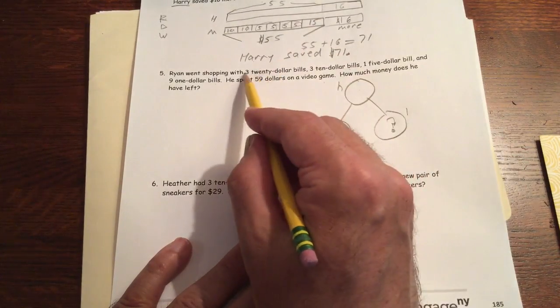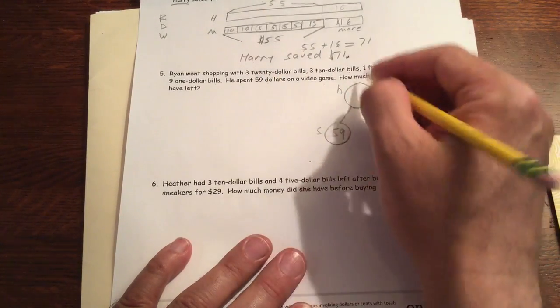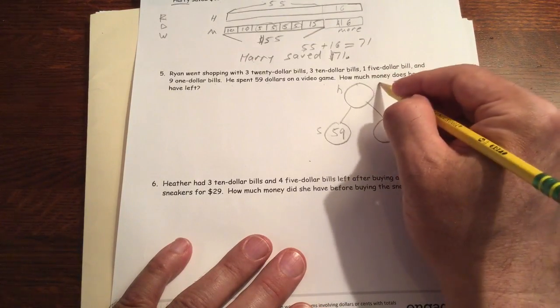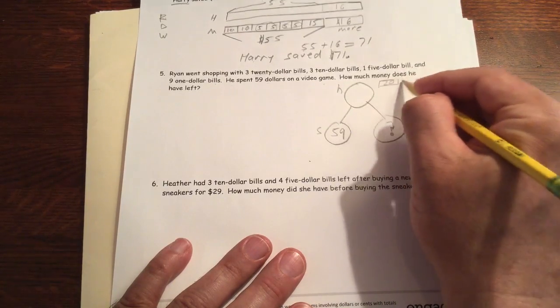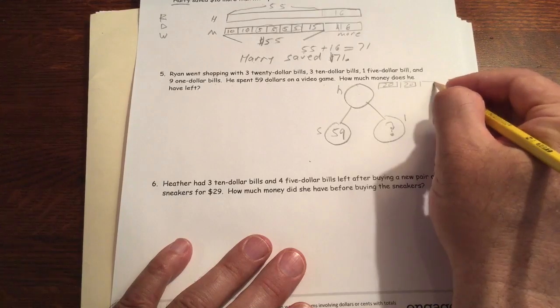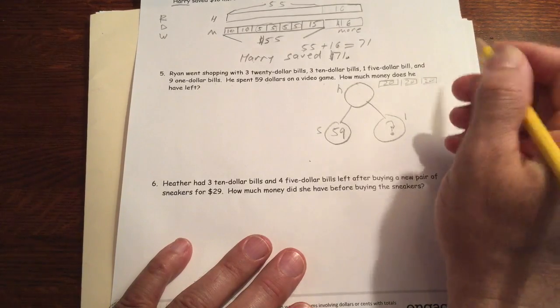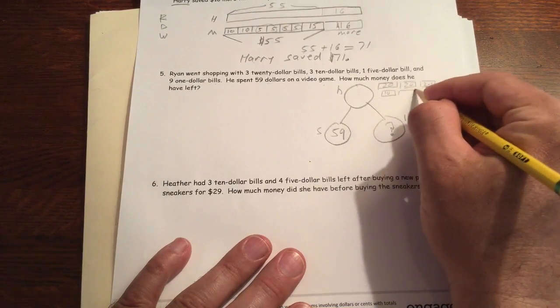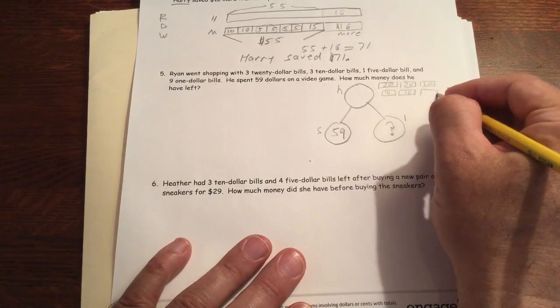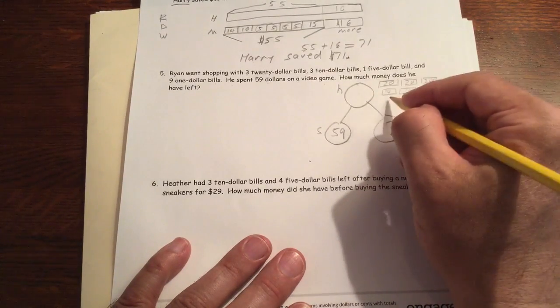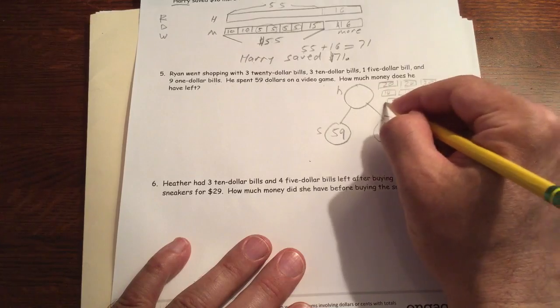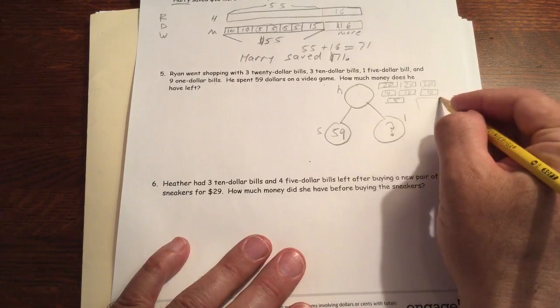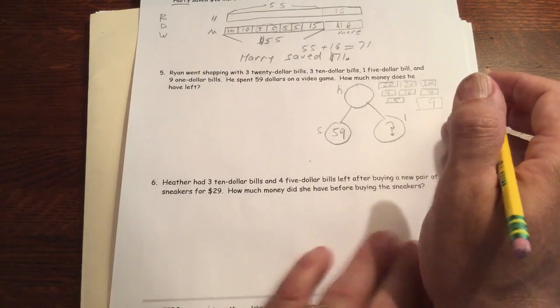How much he has, we have to figure out what this is. This is three $20s. You could draw it and count it. Three $20s. Three $10s. A $5. And nine $1s. I'm not going to draw the nine $1s. I'm just going to make a box here and say nine more.